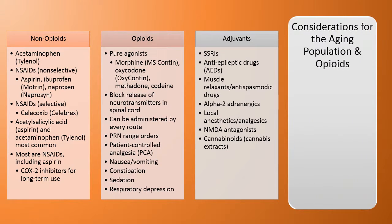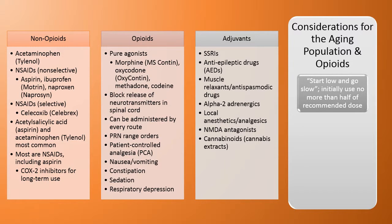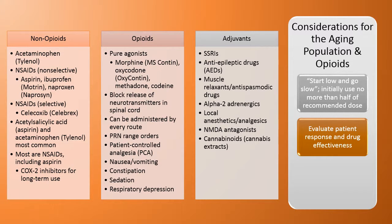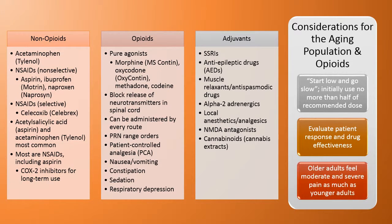For aging populations and opioids: start low and go slow — initially use no more than half the recommended dose. Evaluate patient response and drug effectiveness. Remember, older adults feel moderate and severe pain as much as younger adults.